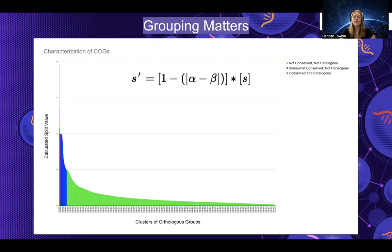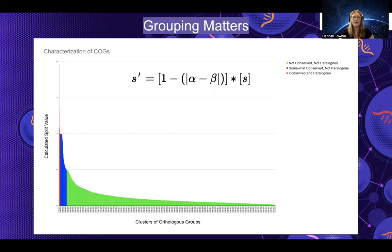We wanted to see how those two compared, and if we were able to notice any trends. For the majority of the COGs here, they are not conserved and not paralogous, but there are a few in red that are of interest — they're both conserved and paralogous, meaning that the groups of genes are found ubiquitously across archaea and bacteria, and paralogous, meaning that there are occasions of gene duplication.